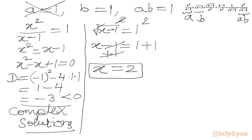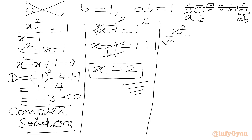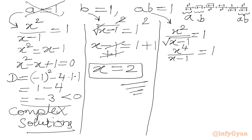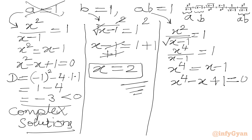Now solving ab = 1, where ab = x²/√(x−1). Setting this equal to 1 and squaring both sides: x⁴/(x−1) = 1, so x⁴ = x − 1, giving x⁴ − x + 1 = 0. This is a quartic equation and we need to check for real solutions.